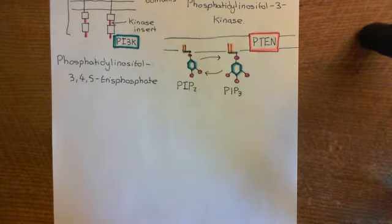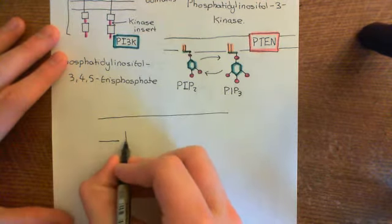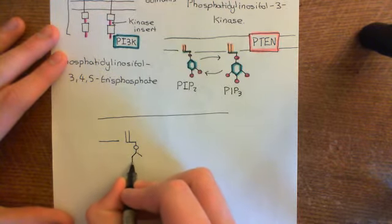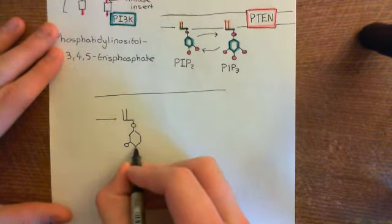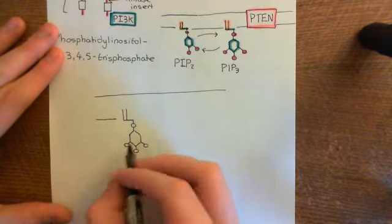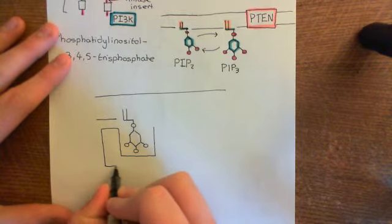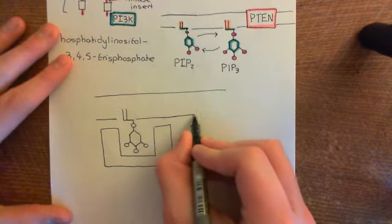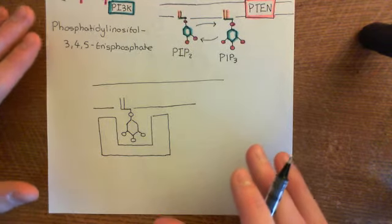PIP3 is going to serve as an attachment molecule for two enzymes. We have now created PIP3 molecules on the inner leaflet of the phospholipid bilayer. Enzymes from the cytoplasm are going to be able to come and bind to these PIP3 molecules. One of these enzymes is going to come and bind to the head of the PIP3 molecule which is sticking into the cytoplasm of the cell. The name of this enzyme is phosphoinositide-dependent kinase 1.